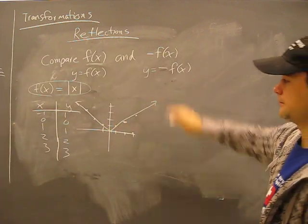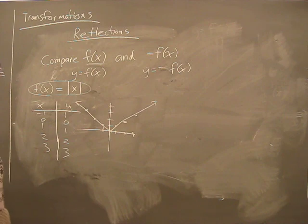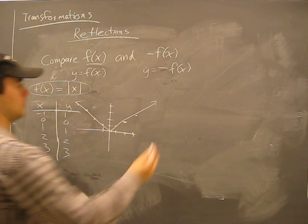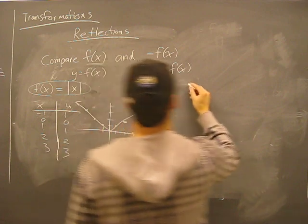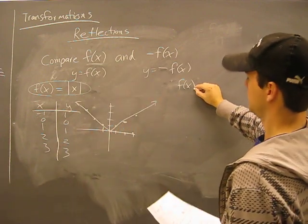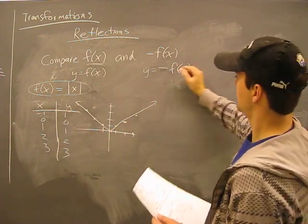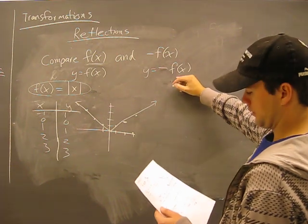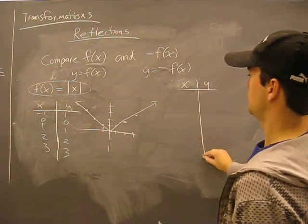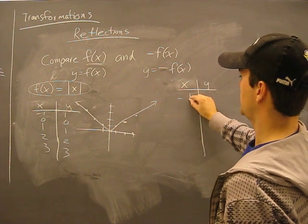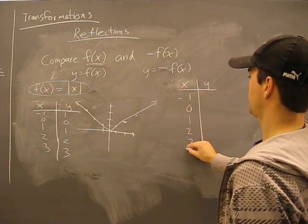What about negative f(x)? Let's work through this. Here's what we're dealing with — a table of values. We'll draw it again: x equals negative one, zero, one, two, three.